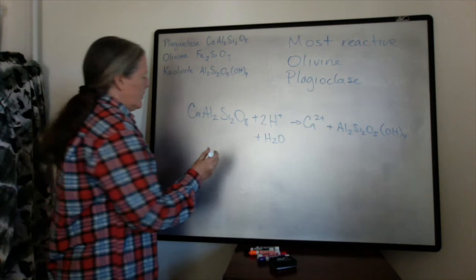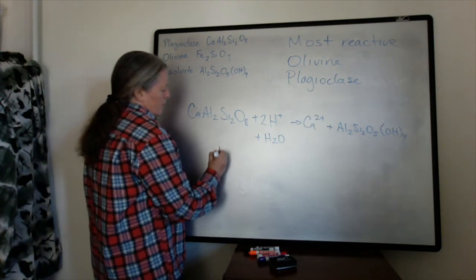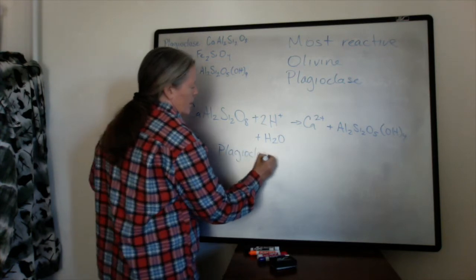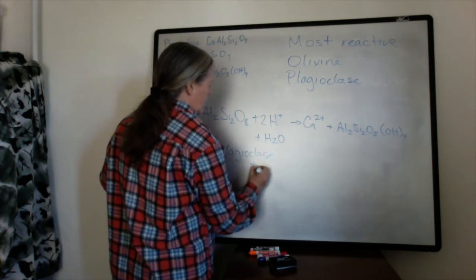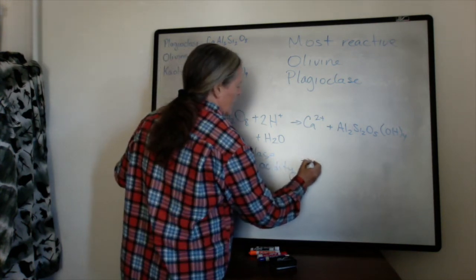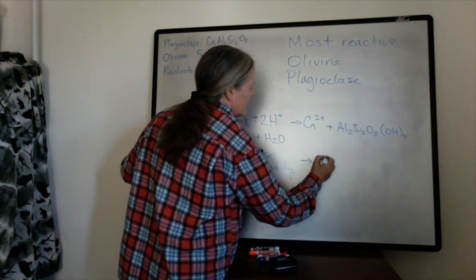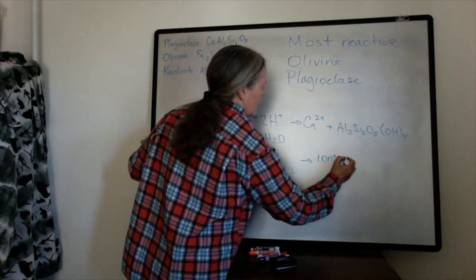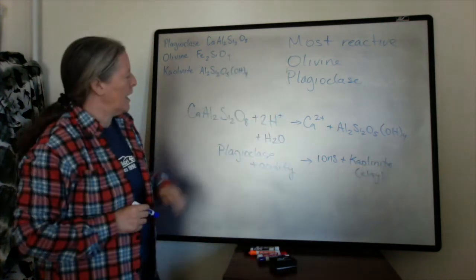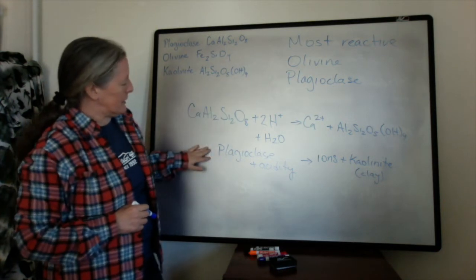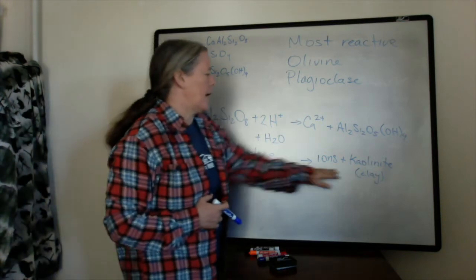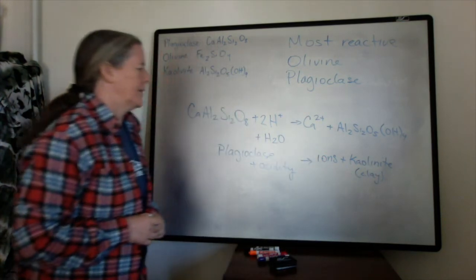So basically what this reaction shows is that plagioclase plus acidity forms calcium ions plus kaolinite. And so when you react the plagioclase here, it changes the pH of the water and it produces these kaolinite clays.